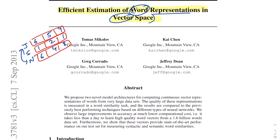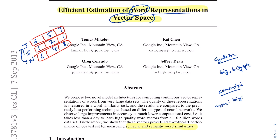In this paper, we want to learn embeddings for words that encode syntactic and semantic similarities. Syntactic similarity means similarity between embeddings for words like 'big' and 'bigger.' Semantic similarity means capturing analogies like 'man is to king as woman is to queen' — we can use embeddings for man, king, and woman to arrive at the embedding for queen.